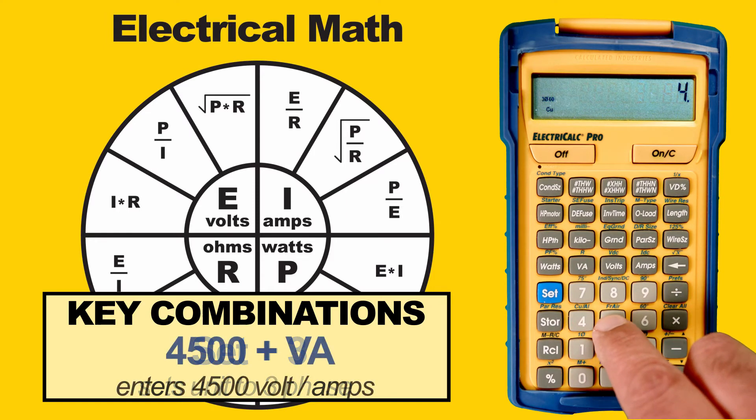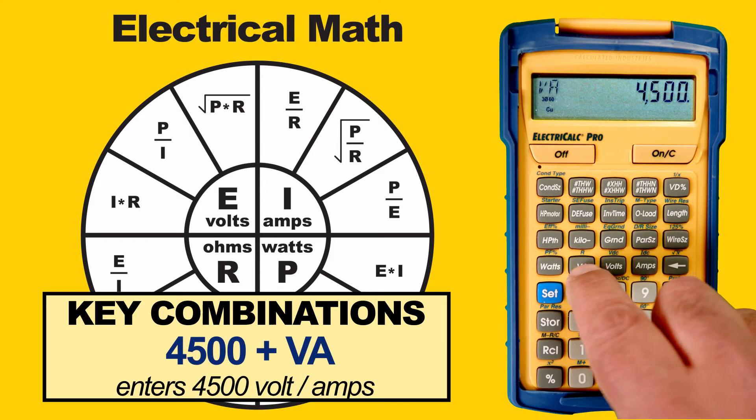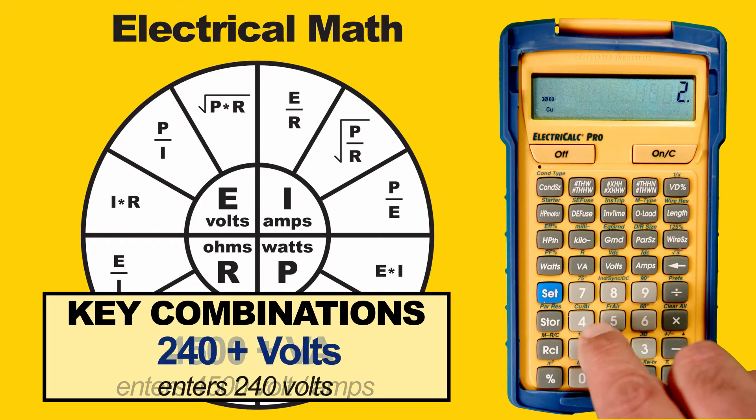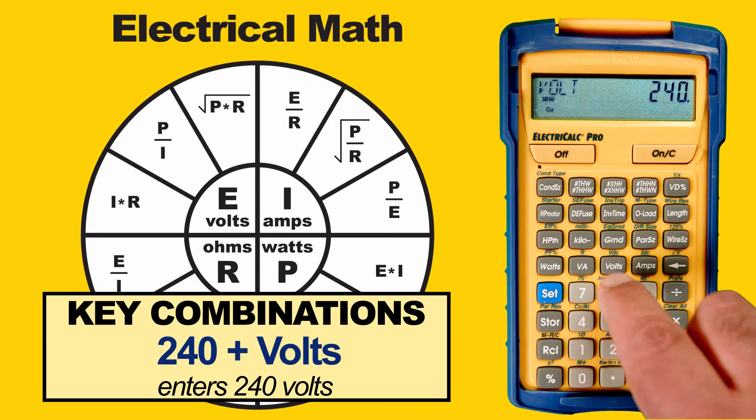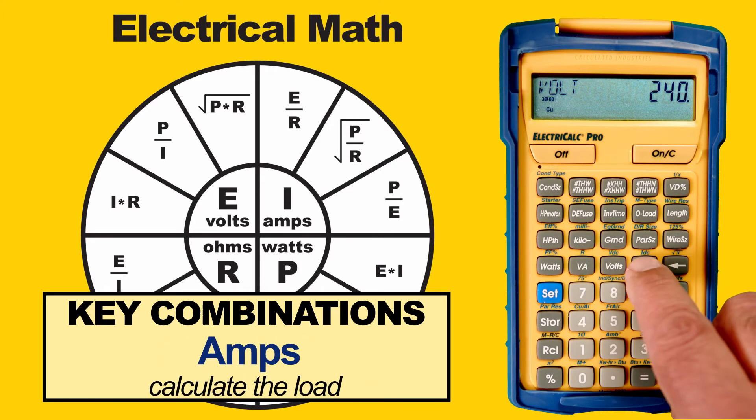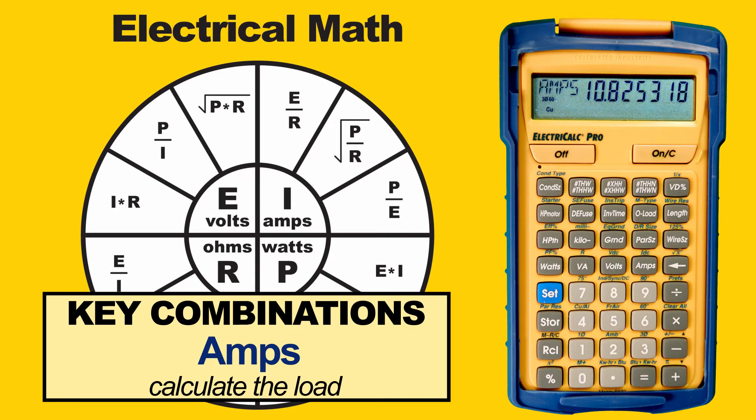We enter our Volt Amps, which in our example is 4500, and our Volts, which is 240. We can calculate our load by pressing Amps and we see that we have roughly 10.8 Amps.